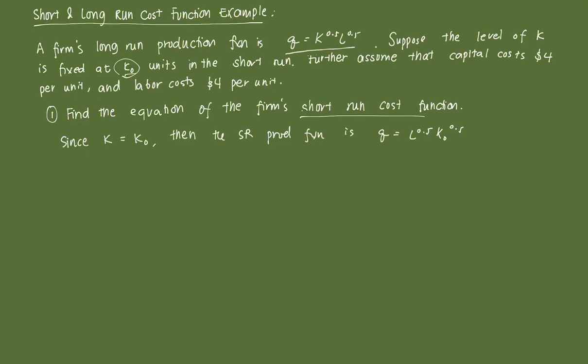Since we're only dealing with one input, we can calculate the optimal level of that input. We want to isolate L. Why are we trying to calculate the optimal L? Remember, K0 or your capital is fixed — you have no control over it. So if we wanted to do a cost minimization procedure in the short-run, it just reduces to this, because we cannot satisfy our first-order conditions when something is fixed.